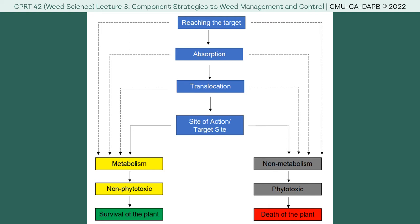For long distance translocation, the herbicide is translocated from the tipmost part to the roots, passing through the xylem and phloem vessels and even through plasmodesmata. For short distance translocation, there is a one-cell-to-another-cell translocation of the herbicide through the plasmodesmata or even the cytoplasmic streaming of the cell.